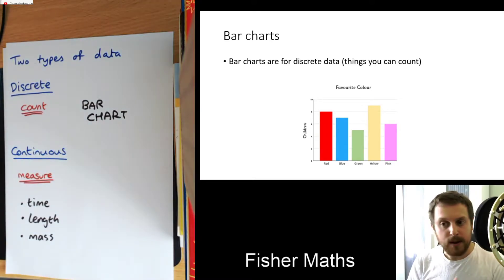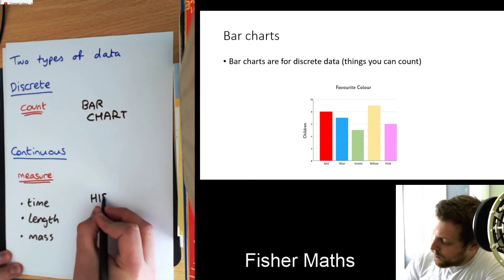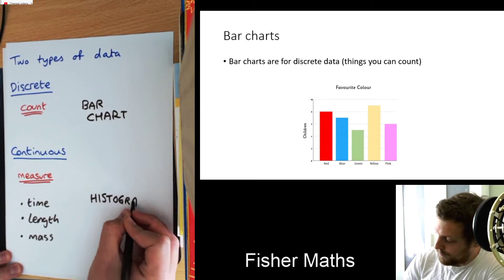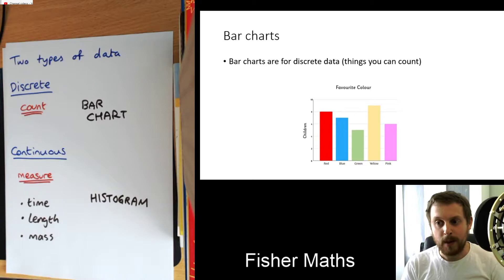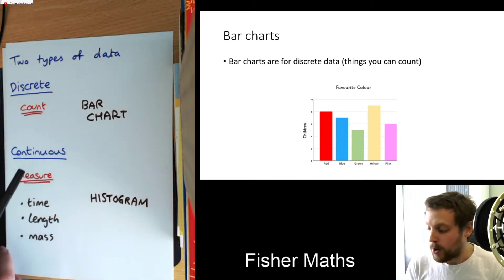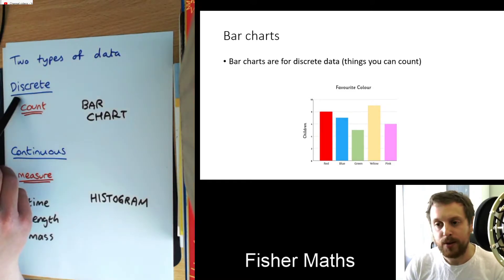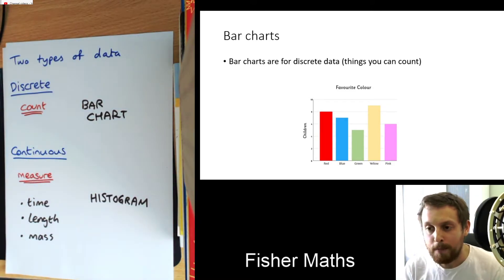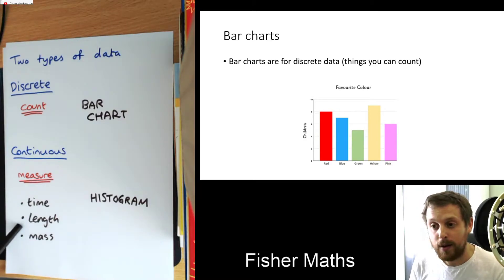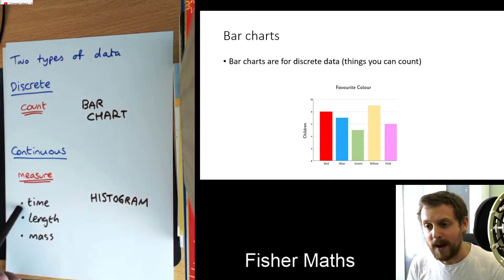It's going to turn out, and I'll cover this obviously in the future videos on histograms, but it's going to turn out that a histogram is a little bit like a bar chart. A histogram looks quite similar to a bar chart, but it's for continuous data rather than discrete. So what's going to go along the bottom of a histogram is going to be something like time, or length, or mass. So it might start at zero and go up in minutes, or it might start at zero and go up in centimetres, or whatever it might be. That's what's going to go along the bottom of a histogram.